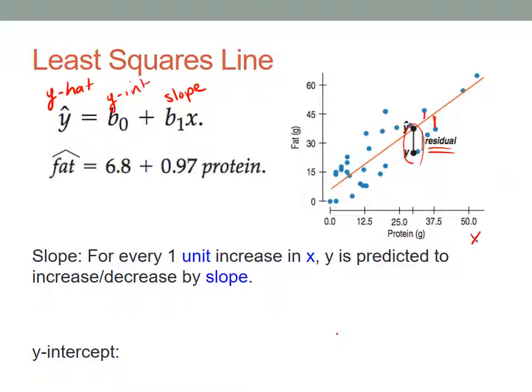In this case x is protein and y is fat. This should remind you a lot of the old y equals mx plus b, right? So m is slope, b is y intercept, so this shouldn't be all that new.